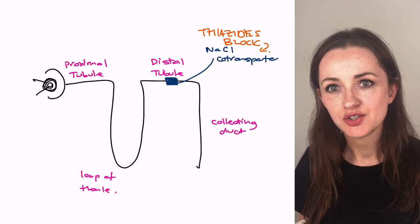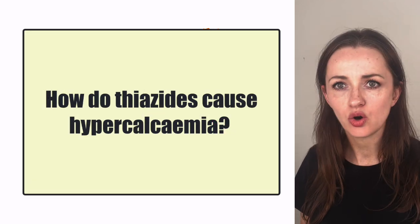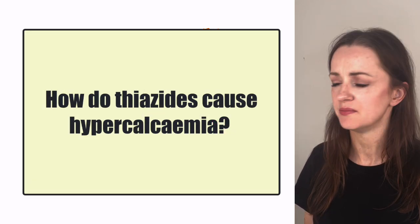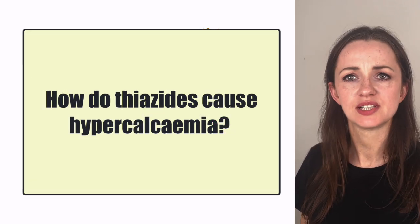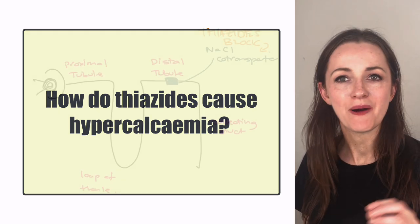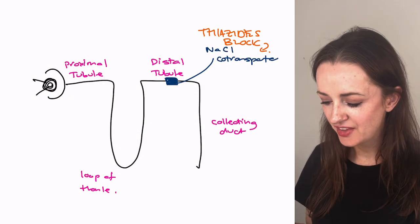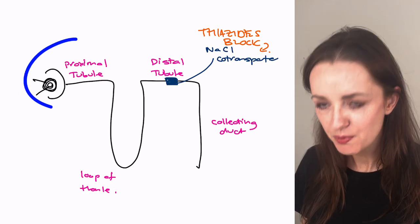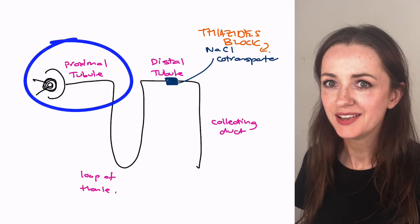But the question we're answering today is how on earth does this cause us to have a high serum calcium? I mean, what's that all about? And this is to do with another part of the nephron and that is the proximal tubule. Let me show you.